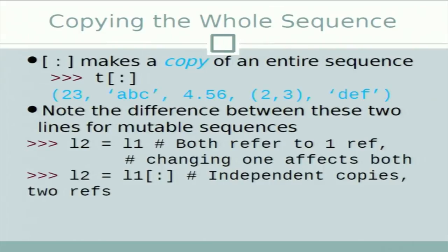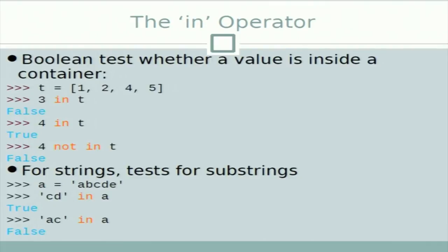Note the difference between mutable sequences: since list is a mutable sequence, if we define 'l1' and 'l2 = l1', both refer to one object — changing one affects both. If we define 'l2 = l1[:]' it is an independent copy. There is a boolean 'in' operator for checking membership in sequences. For example, given 't = [1, 2, 3, 4]': '3 in t' returns False because 3 is not in the list — wait, actually '4 in t' returns True and '4 not in t' returns False.